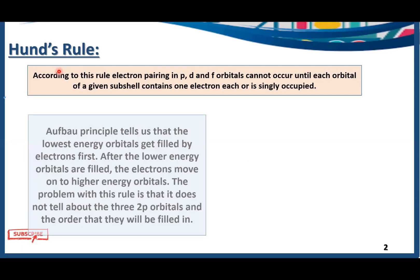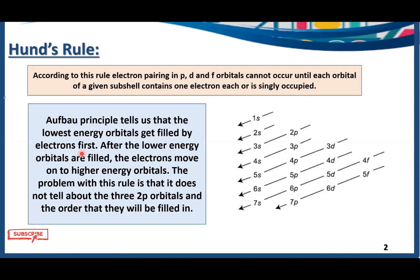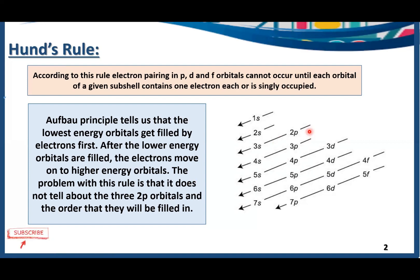Hund's Rule was proposed after the Aufbau Principle. The Aufbau Principle tells us that the lowest energy orbitals are filled by electrons first — orbitals with low energy fill first, then higher energy orbitals. The problem with this principle is that it does not tell us about the three 2P sub-orbitals, or D and F orbitals, and how we are going to fill them. The Aufbau Principle was unable to explain how to fill electrons in those three sub-orbitals.